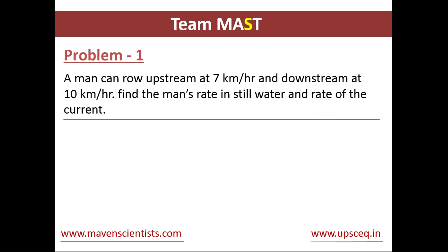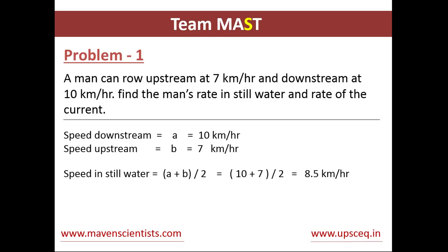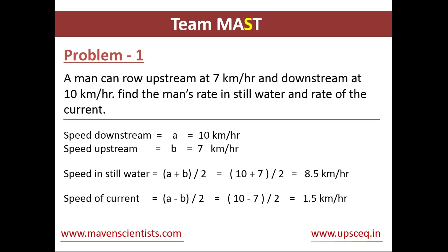Let's take a problem. A man can row upstream at 7 kilometers per hour and downstream at 10 kilometers per hour. Find the man's rate in still water and rate of the current. We have speed downstream equals 10 and upstream equals 7. So the speed in still water is (10 plus 7) divided by 2, which equals 8.5 kilometers per hour. The speed of current is (10 minus 7) divided by 2, which equals 1.5 kilometers per hour.